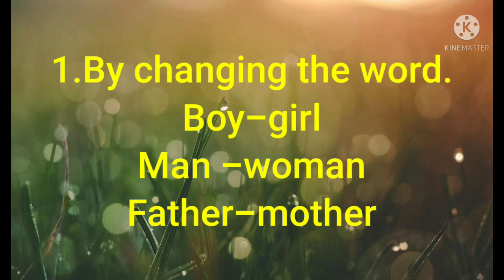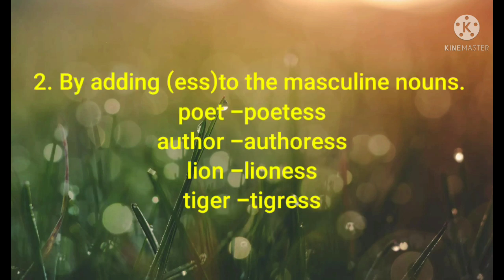In rule two, we add '-ess' to the masculine noun to make it a feminine noun. For example: 'poet' is a masculine noun — a male — but when we add '-ess' it becomes 'poetess', meaning a lady poet. Similarly: author, lion, tiger — we add '-ess' to form the feminine. This is how we change masculine nouns to feminine nouns.